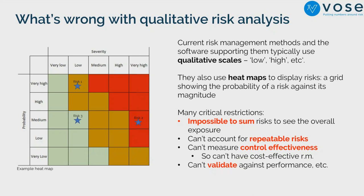We also wanted to allow people to talk about risks that can repeat. When a probability scale goes from 'very low' to 'very high,' it implies very high is close to one — but many risks like strikes, tsunamis, or fires can occur several times. You have to talk about frequencies rather than probabilities. And if you have a scale with no upper end, you can't have heat maps because at some point everything is red. So we've unapologetically avoided including any heat map.